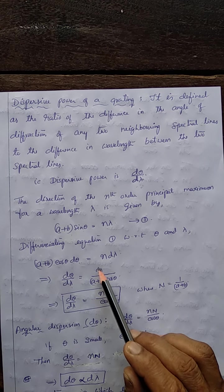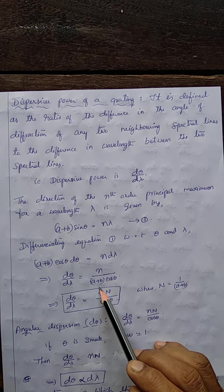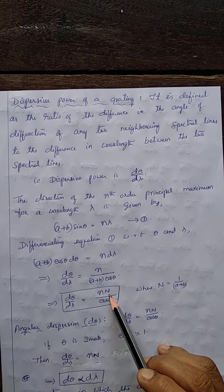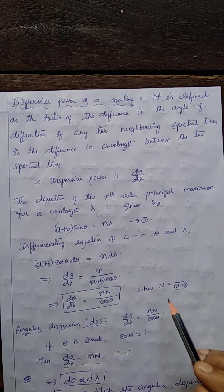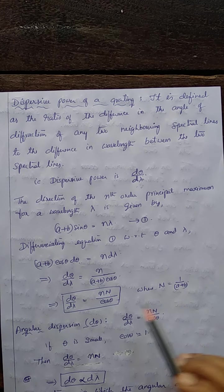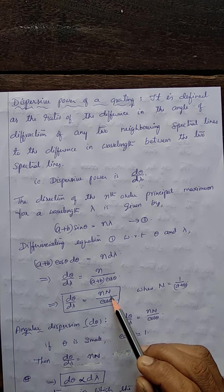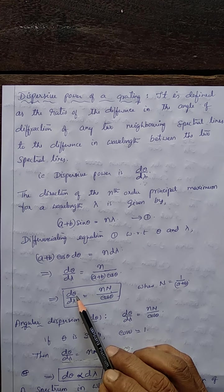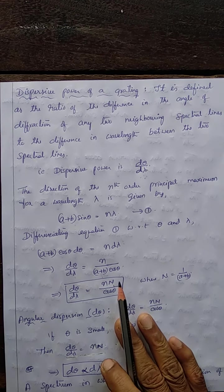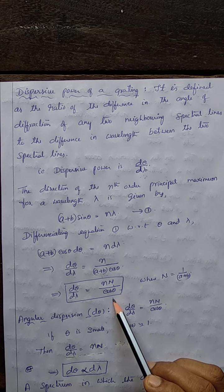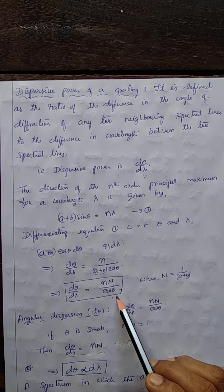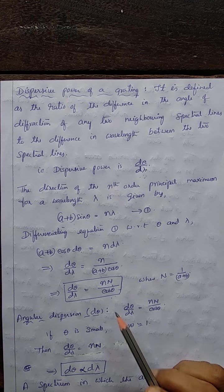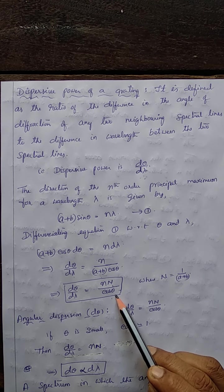Here, 1/(a + b) is nothing but N, the number of lines per meter on the grating surface — the grating element or grating constant. So dθ/dλ = nN / cos θ. This is the expression for dispersive power of a grating.